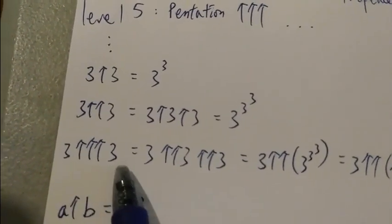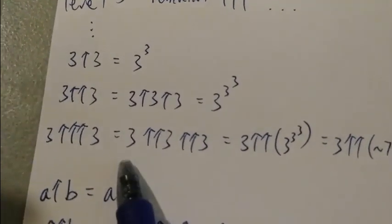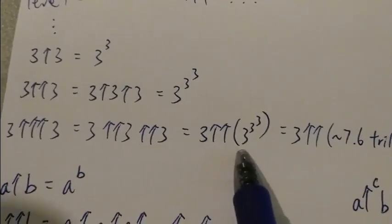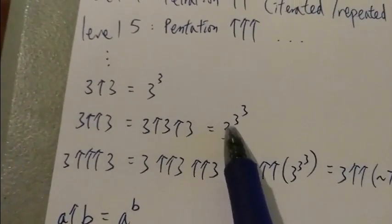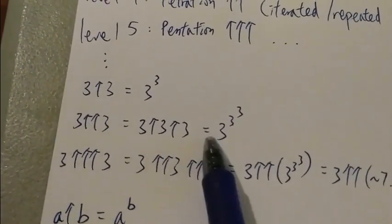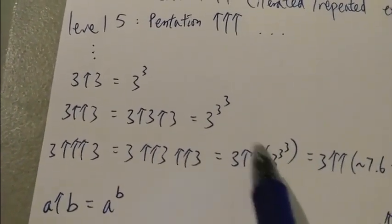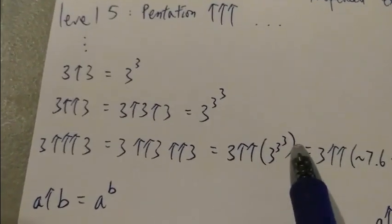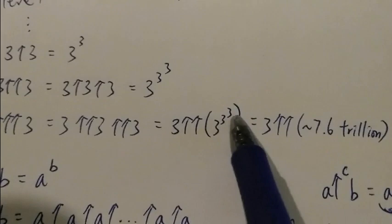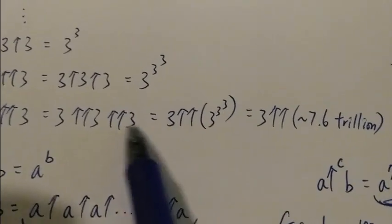And then with 3 triple arrows 3, it equals to 3 double arrow 3 double arrow 3 double arrow, which is equal to 3 double arrow of this thing over here. Because 3 double arrow 3 is equal to this one. For this kind of notation, you start from the right to the left. So you have to start work out from the right first, and then you work to the left.